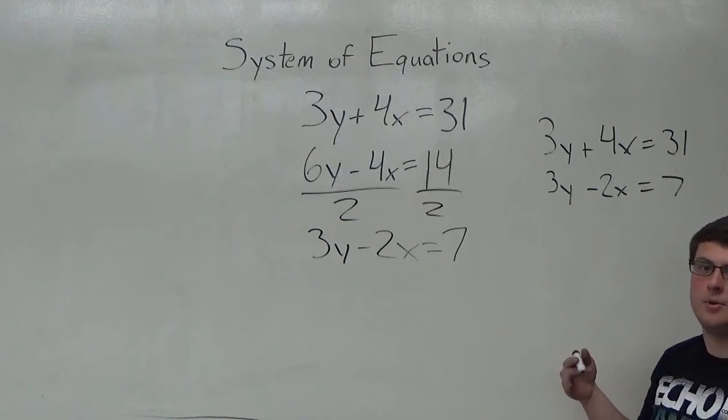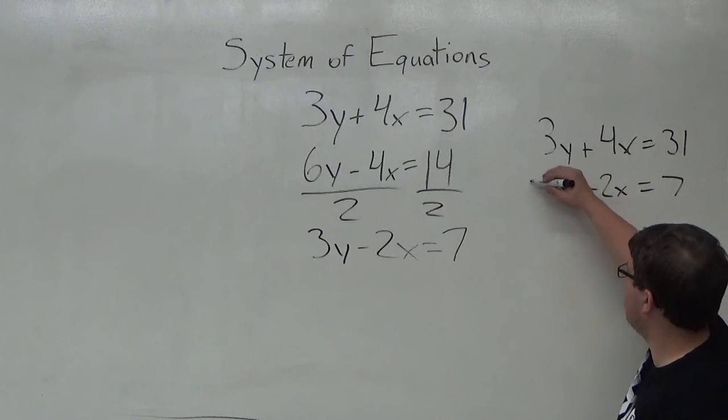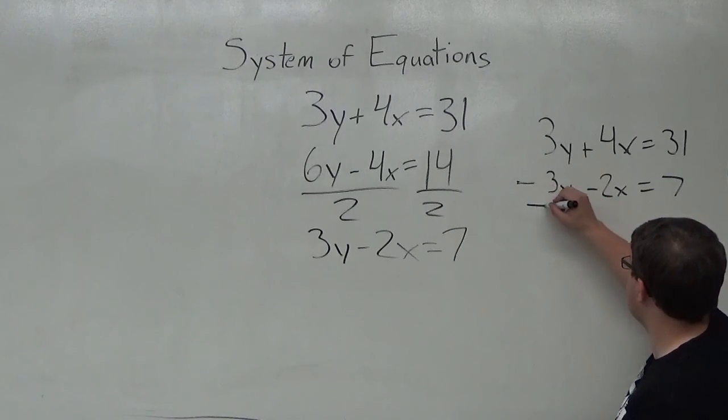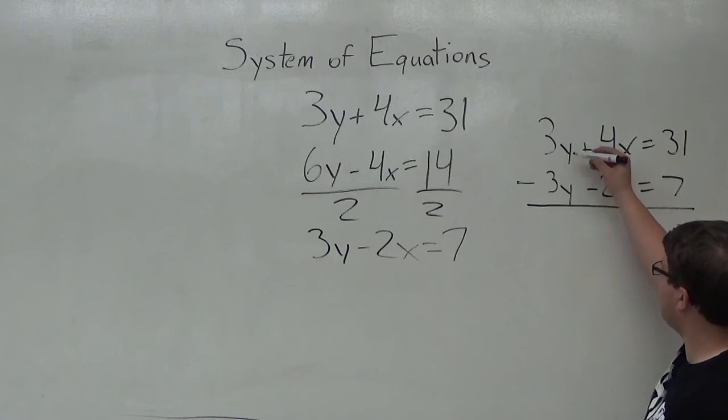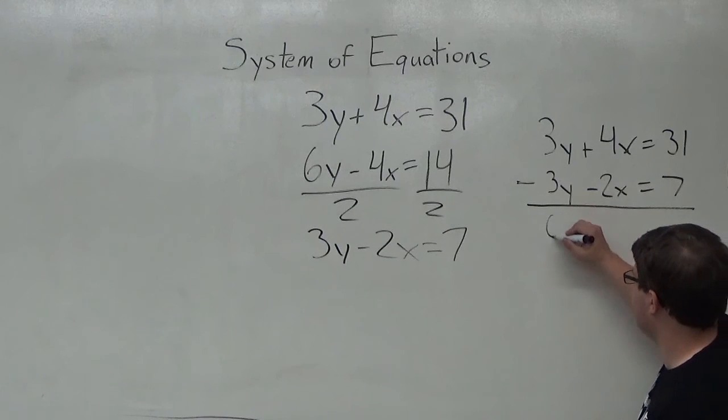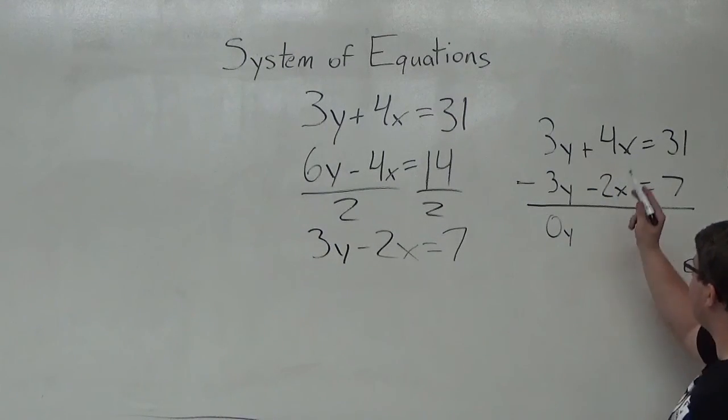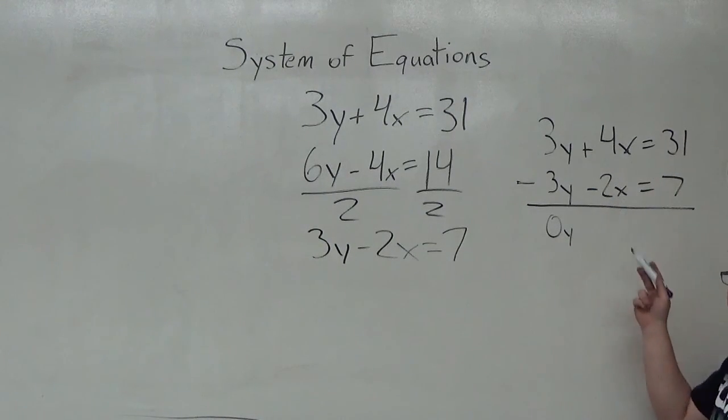But this time I'm going to end up subtracting instead of adding. So I'm going to subtract, and we're going to get 3y minus 3y—that's equal to 0y. 4x minus a negative 2x, which is really just 4x plus 2x, we get 6x, positive 6x,